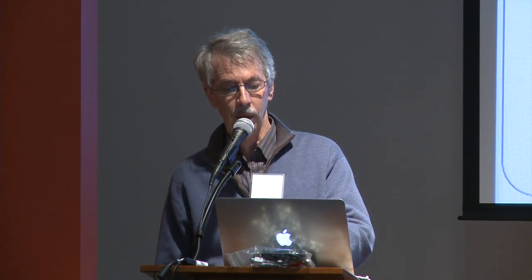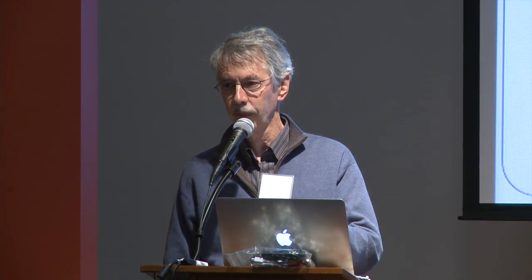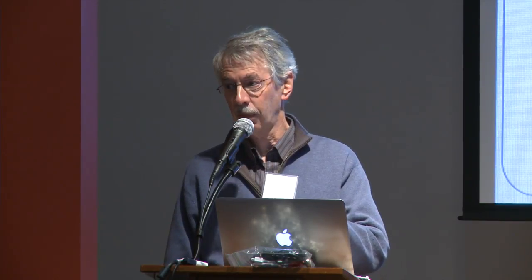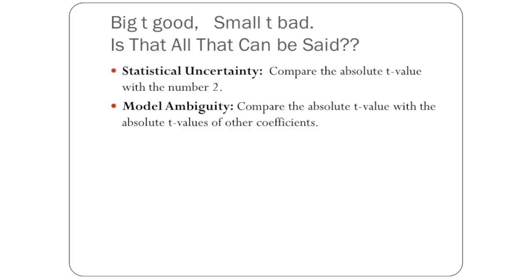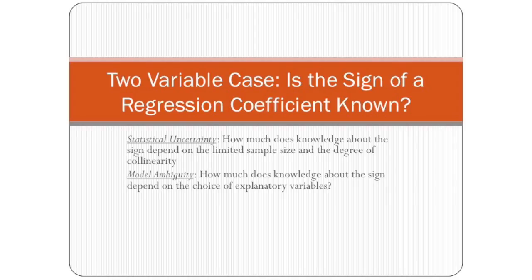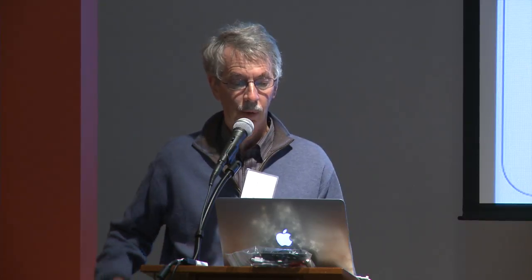Let's start with a two-variable regression. We're going to normalize the dataset so that everything has unit variance, leaving only three sufficient statistics: the sample size; the correlation between the two explanatory variables rho; and the two correlations between the dependent variable and each explanatory variable, which I'll call R1 and R2. So we're going to build a sturdiness measure based on those three parameters. The necessary and sufficient condition for B1 and R1 to have the same sign is that the product of the ratio R2 over R1 times rho is less than one. So that becomes the sturdiness measure.